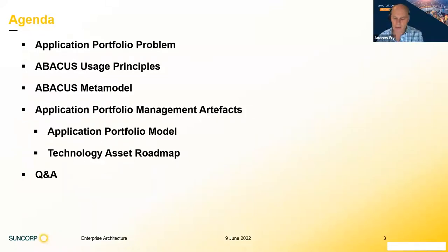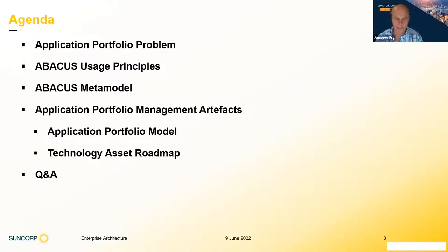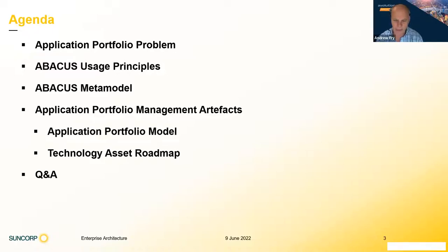So today I'm going to outline our application portfolio problem, and then in terms of the solution to that, the principles we've developed for using Abacus, our meta model, then take you through two key artifacts we use for application portfolio management — the application portfolio model and the technology asset roadmap — followed by questions. If you've got some burning questions as I go through, I'll call them out and address them.